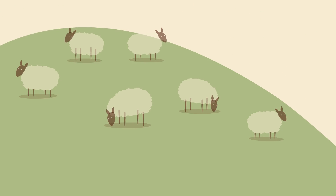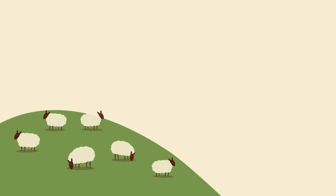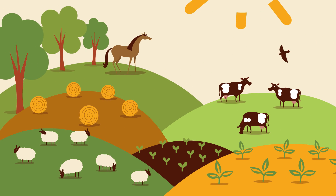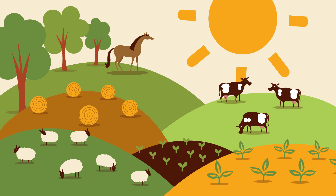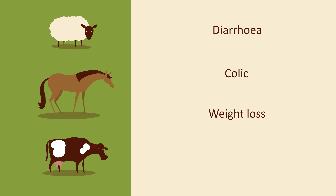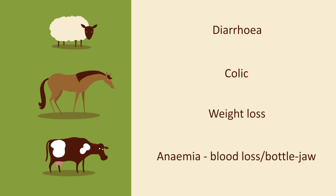The young worms can survive quite happily on pasture for several months. There are many different types of parasitic worms that cause different problems, such as diarrhoea, colic, weight loss and anaemia. So, how can we control these worms and minimise the damage they do?